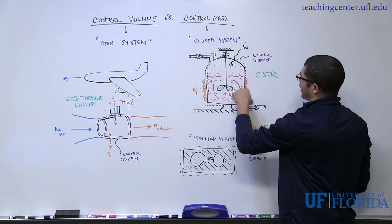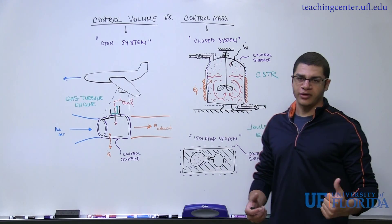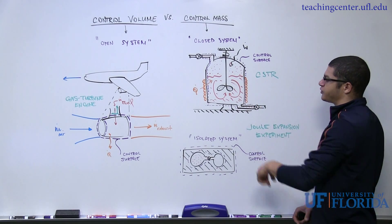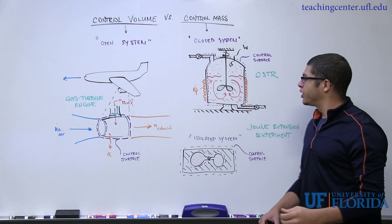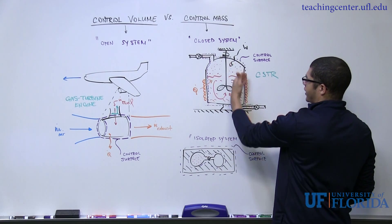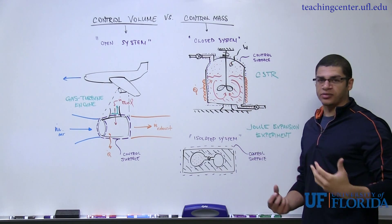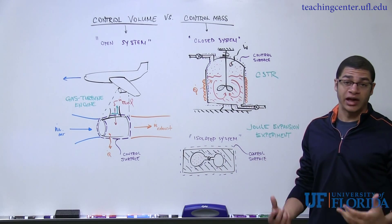So I've drawn a CSTR, and the chemical engineering students should be very familiar with this. Mechanical aerospace, maybe not so much, but a CSTR is nothing more than a continuously stirred tank reactor. So we may, within this tank, have some kind of liquid or gas or other substance, gel or slurry, where a chemical reaction is occurring or we would like to occur.